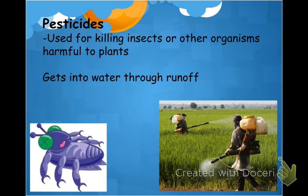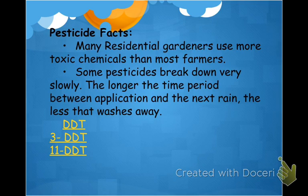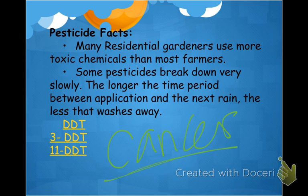Pesticides are found in agriculture areas but also in urban areas because people use them in their gardens. Pesticides kill insects or weeds, and when runoff occurs they get washed into water. The main disease caused by pesticides is cancer. The key thing to know is that pesticides enter water through runoff, and they are strongly associated with causing cancer.